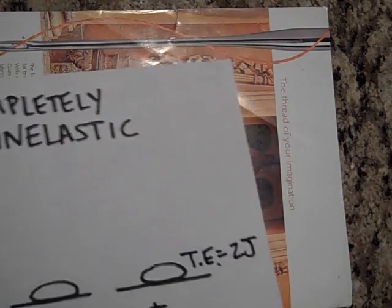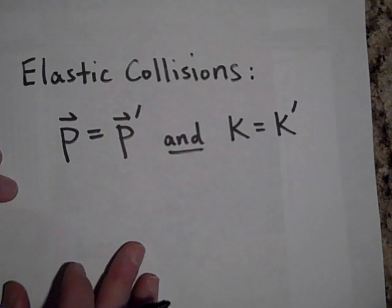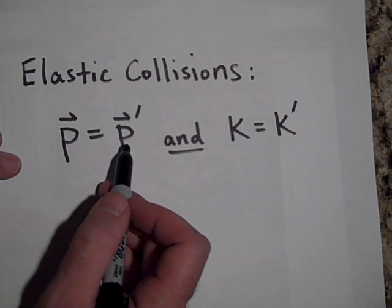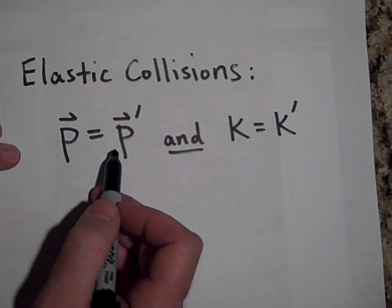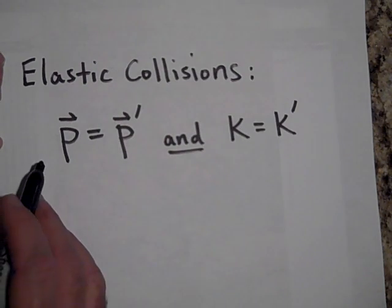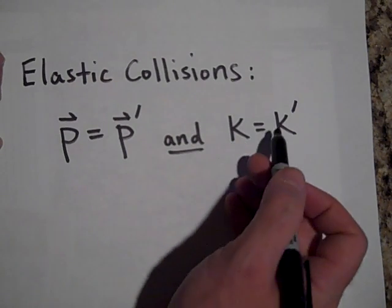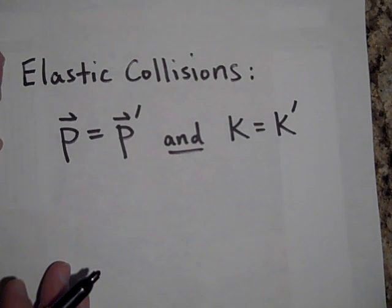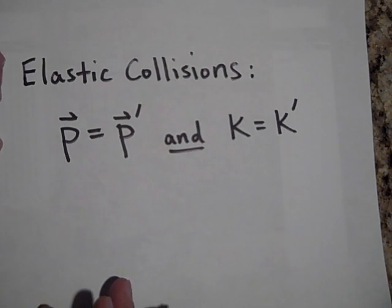For an elastic collision, two things are true: momentum before equals momentum after, because the forces between the objects cancel and there's no net force on the system. Additionally, kinetic energy before equals kinetic energy after. A cue ball striking another pool ball head-on with very little spin can be pretty close to elastic.